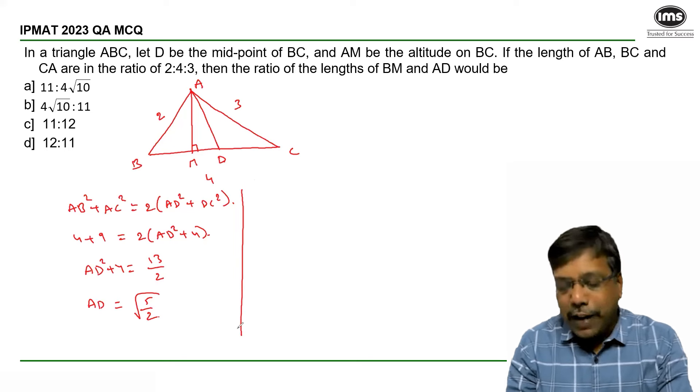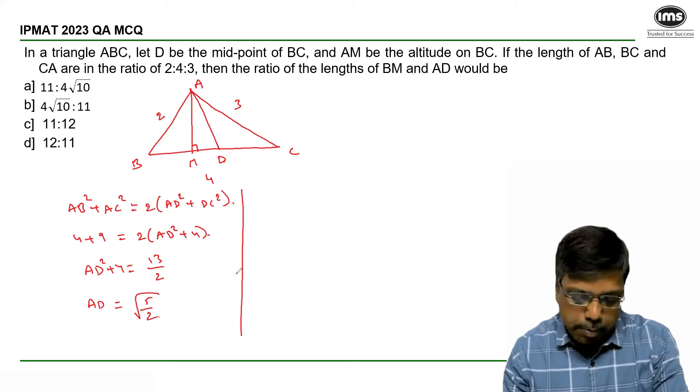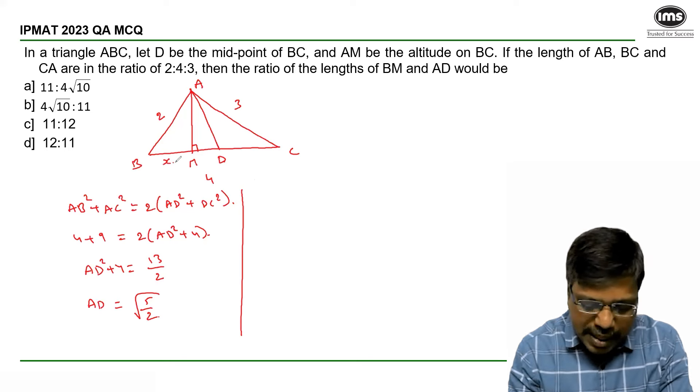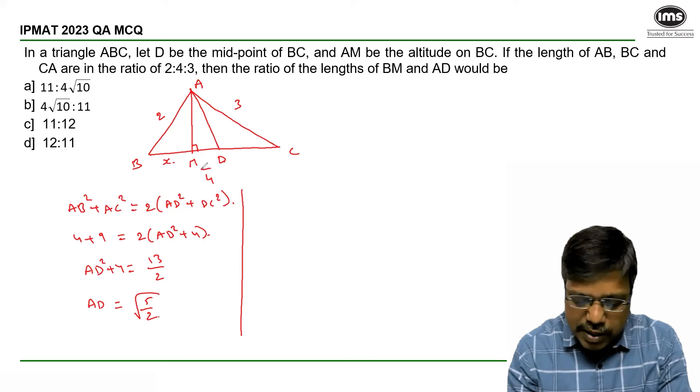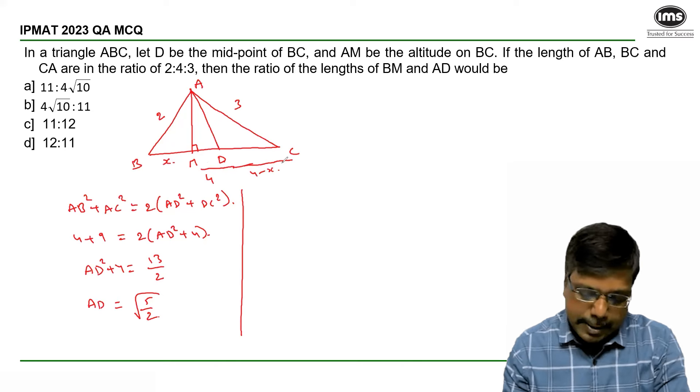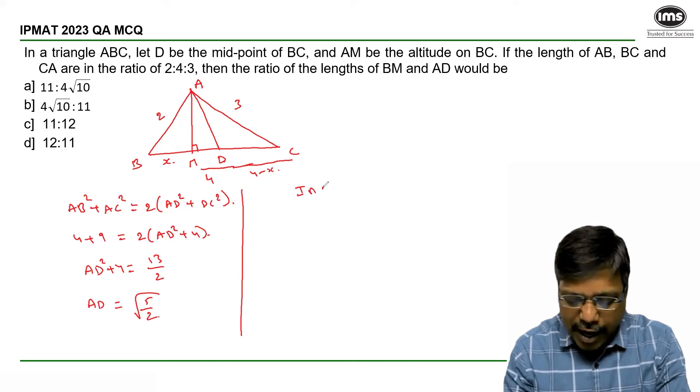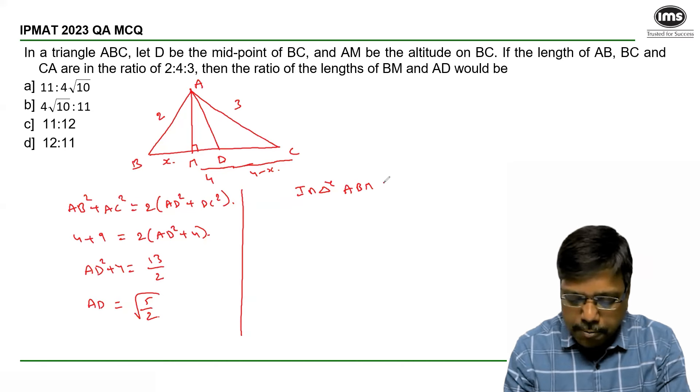Now to calculate the value of BM, let BM = x, which means MC = 4 - x. Consider triangles ABM and ACM.